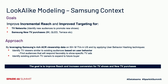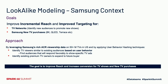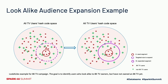Considering the existing TV universe, we understand who is an existing TV owner, what type of user behavior they exhibit, and use that to find potential new TV purchasers. Our approach at Samsung leverages ACR viewership data from 50-plus million TVs in the US. By applying user behavior hashing techniques, we can identify TV viewers similar to existing audiences based on user behavior.